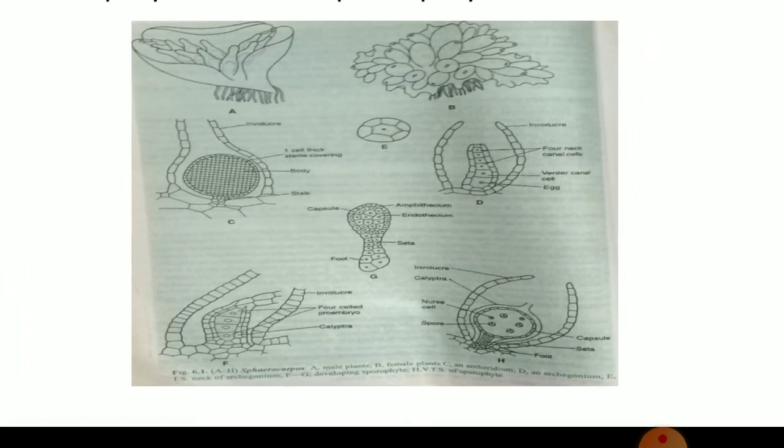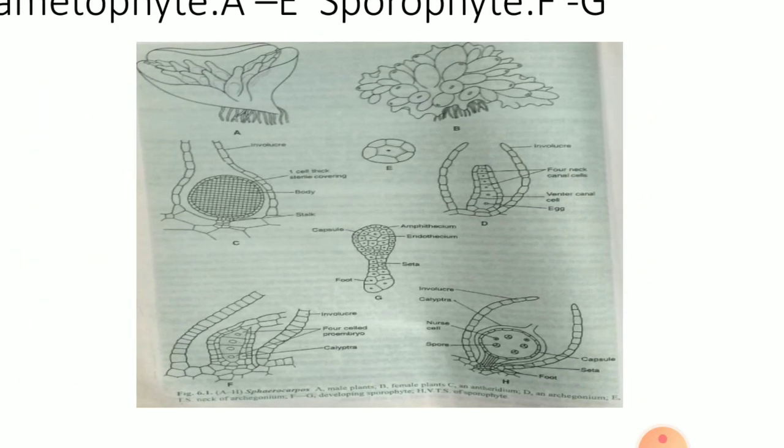Now the germination of spores. Two spores of a tetrad germinate and form two small thalli of male plants, and adjacent to the male plants, the remaining two spores of the same tetrad germinate and form two large thalli of the female plants. So spores of a tetrad after germination form four groups of plants: two are male and two plants are female.